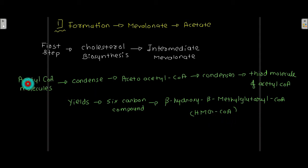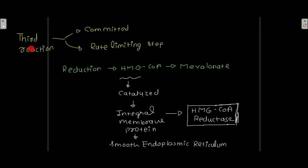Two acetyl coenzyme A molecules condense to form acetoacetyl coenzyme A, which then condenses with another acetyl coenzyme A to produce HMG coenzyme A — made up of three acetyl coenzyme A molecules. The third reaction is a committed and rate-limiting step: the reduction of HMG coenzyme A into mevalonate, catalyzed by the integral membrane protein of the smooth endoplasmic reticulum known as HMG coenzyme A reductase.